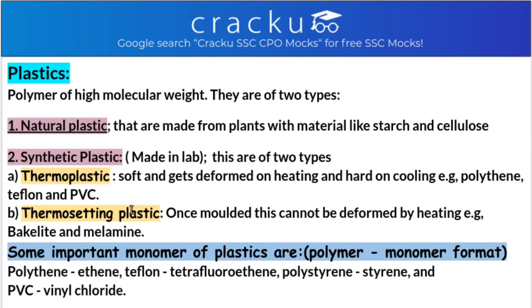Thermoplastics soften or get deformed on heating and harden when cooled. They can repeat this process innumerable times. Examples of thermoplastics are polythene, Teflon, and PVC (polyvinyl chloride).